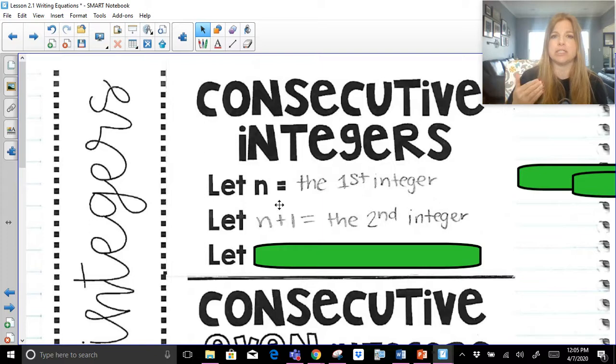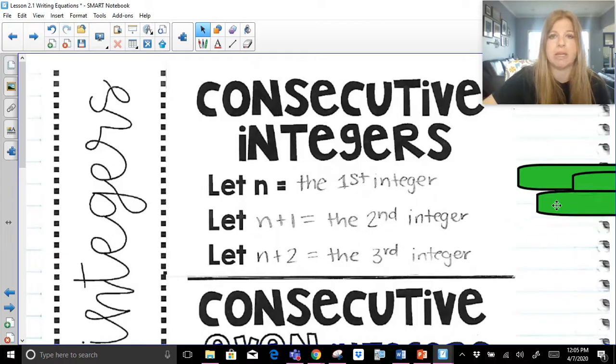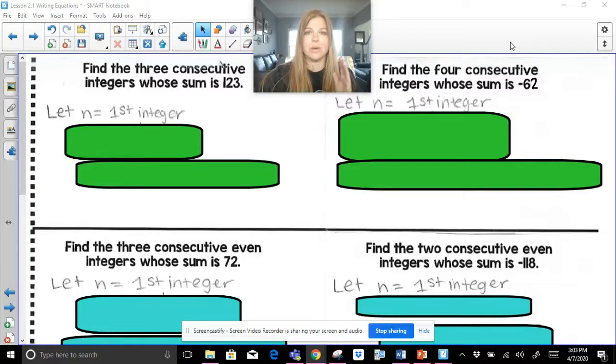How would you then get to the next integer? It would be the 5, the original 5, plus 2. So n plus 2 would actually be my third integer. So now we're going to try some practice problems along with that first skill of just consecutive integers.